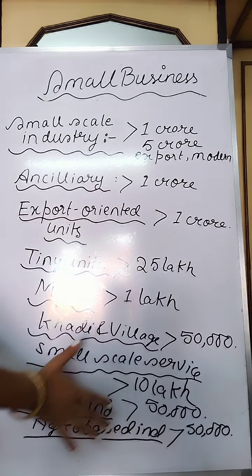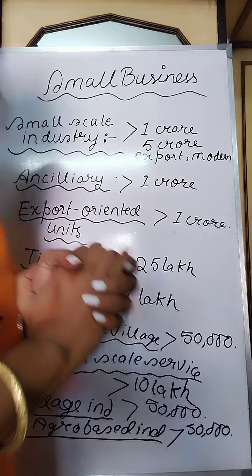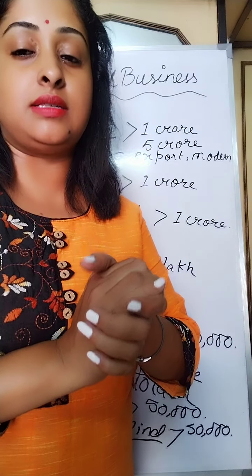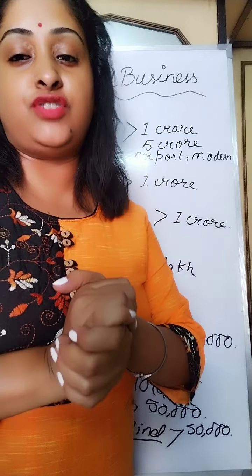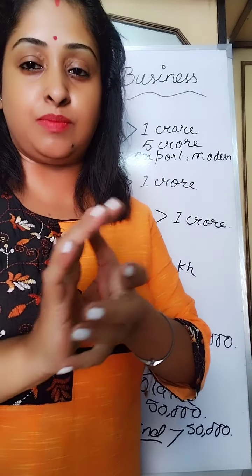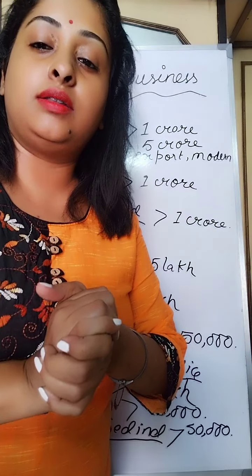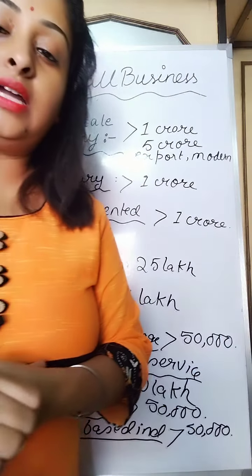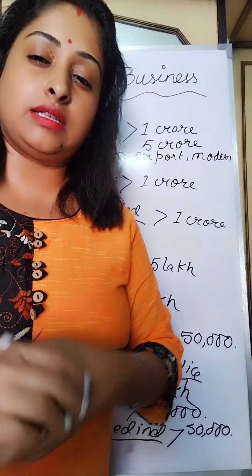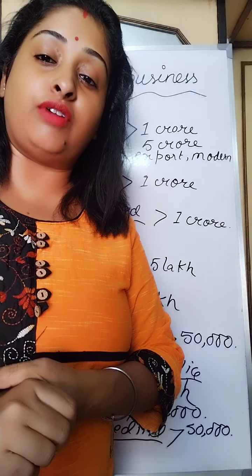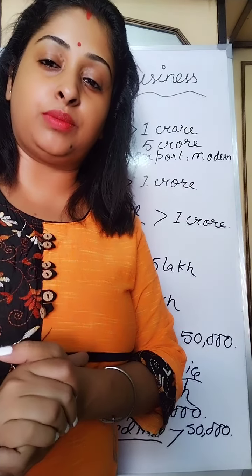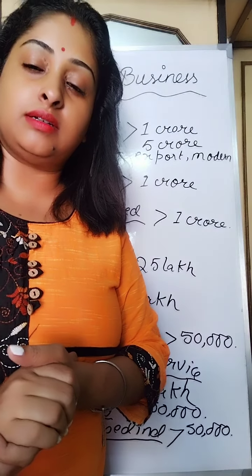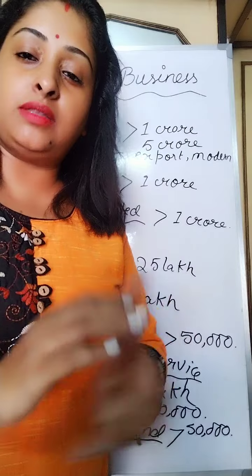So these are the different investment criteria according to the categories before the MSMED Act 2006. In my next class, I will cover another topic from small business. This is a very informative chapter, and you have to know a lot of information about the investment criteria because MCQ questions will be based on these. A variety of short questions can come from this chapter. Small scale industries play a very vital role in our country, so this is a very important chapter. Go through the different objectives as provided in class. Prepare this well. Goodbye.